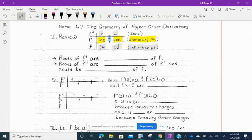So as a little summary, the roots of the first derivative are stationary points of the original graph F. The roots of the second derivative are stationary points of the first derivative, and they could be inflection points of F.